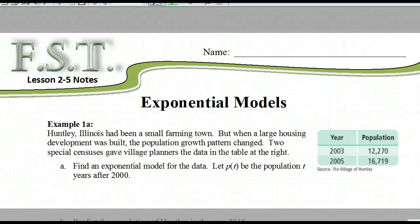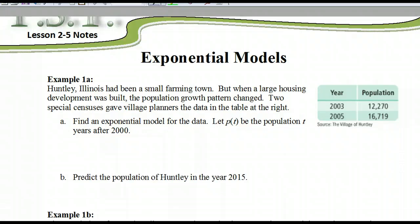Alright, so we're going to be taking this data that's on the right here, and we're actually going to make two equations with it. We don't know what A is, but we do know a couple things, and this is what we know. We know that I'm going to take the larger population at a later year first, so we know that 16,719, that's going to equal A, we don't know B. But we do know the year, the year is 2005, and one of the things that it says is let the population T be after 2000, so what's 2005 minus 2000? Five, so it's going to be B to the 5th.